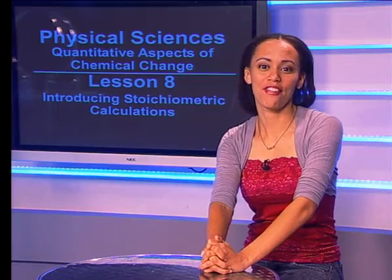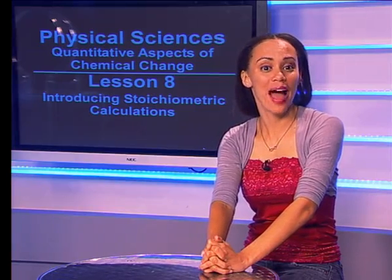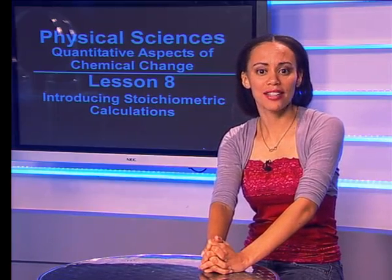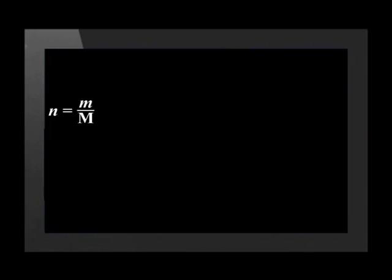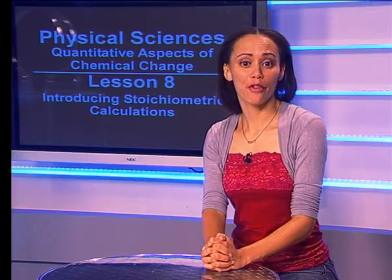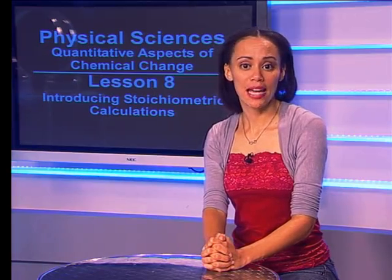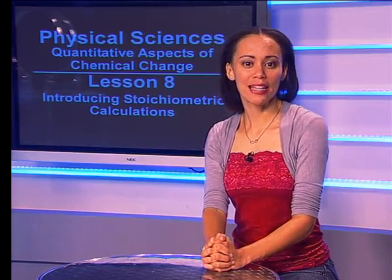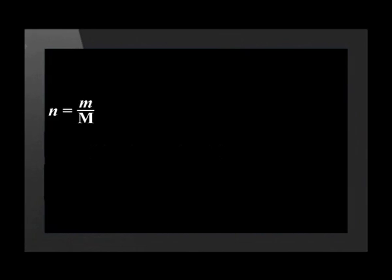The fourth and final step is to convert the number of moles back to what was required. The question stated that we had to calculate the mass of potassium chlorate. We start with the formula number of moles equals mass divided by the molar mass. The required number of moles of potassium chlorate is 1 mole and we determine the molar mass by adding the atomic masses of potassium, chlorine and 3 oxygen atoms.